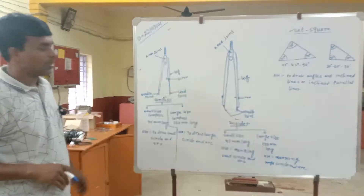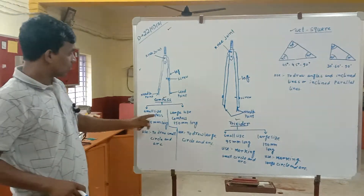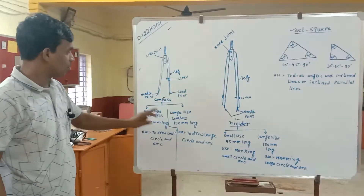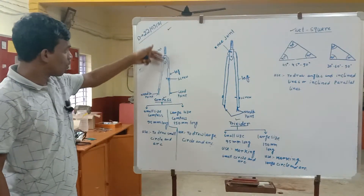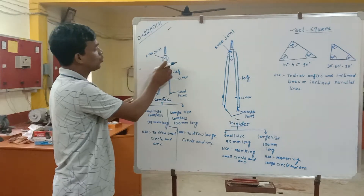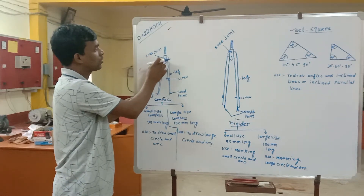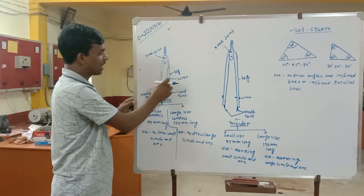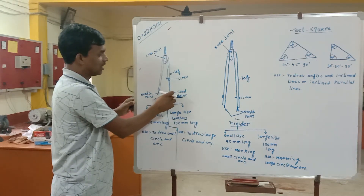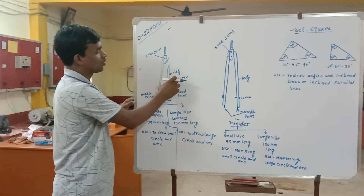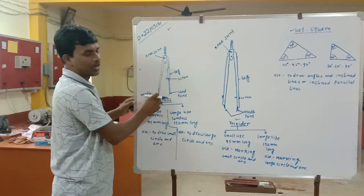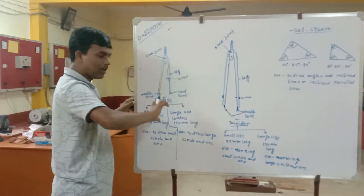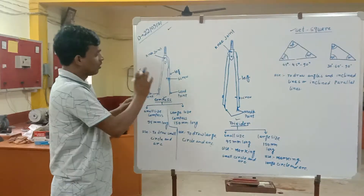Where is the compass? This is a long bow compass, which is a large size compass, and this is a small bow compass, which is a small size compass. The compass has parts including the knee joint, the leg, and the lead point. The lead point is the needle point. When you push the lead and draw, this forms the compass.